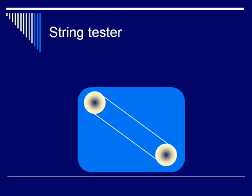The string tester consists of a string placed around two pulleys, attached to a motor, and placed in a water bath. The string is echogenic, so you can see it on the image. The motor can move the string at any specific velocity, so we can evaluate how accurate the Doppler on this machine is.